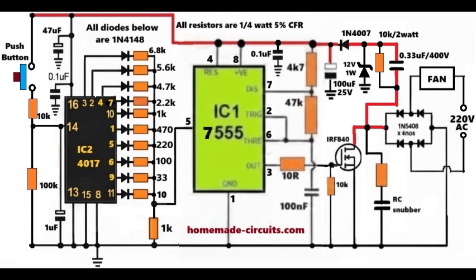These resistor values, with reference to the fixed 1K ground resistor, form a voltage divider and decide how much control voltage reaches pin 5 of the 7555 IC. This behaves like a step-by-step voltage selector. Lower resistor means higher control voltage and higher fan speed. Higher resistor means lower control voltage and lower fan speed.